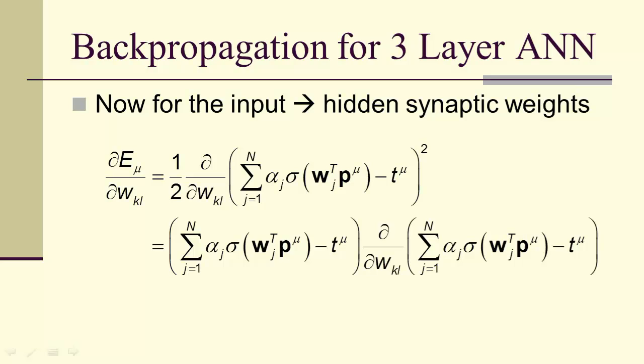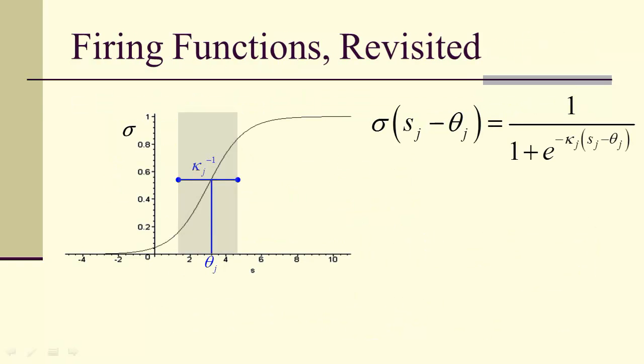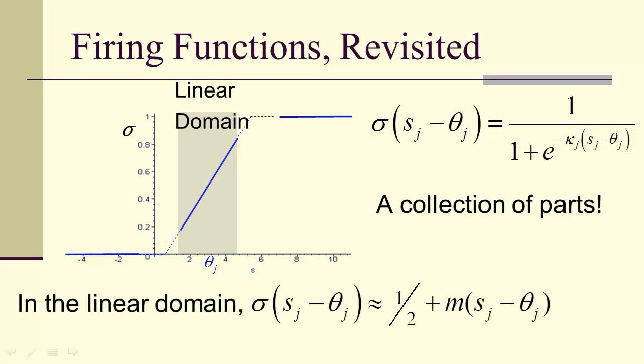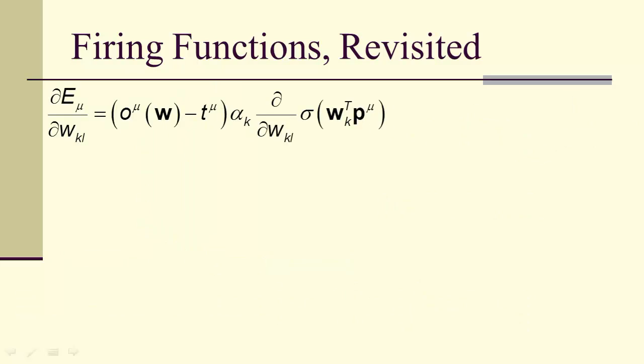Now, the W sub kL is inside of the sigma. So we're going to get the alpha sub k, the kth term, and then the derivative with respect to kL, where L is one of the entries in the W sub k vector. Now, before we do this, let's go back and look at firing functions again. So sigma is a function of s. We're using this traditional logistic firing function. But we should think of firing function as a collection of parts. So in the center, we have this linear part. And that linear domain is where the firing function looks like a linear function.